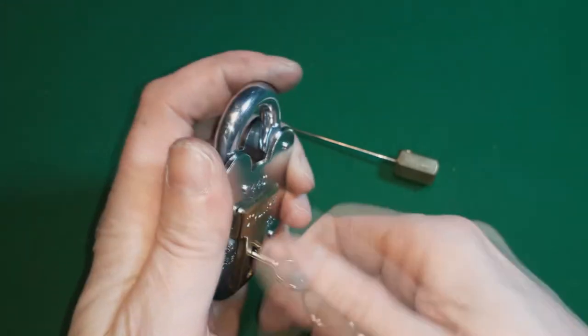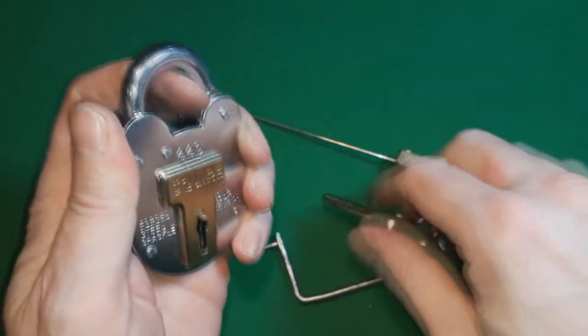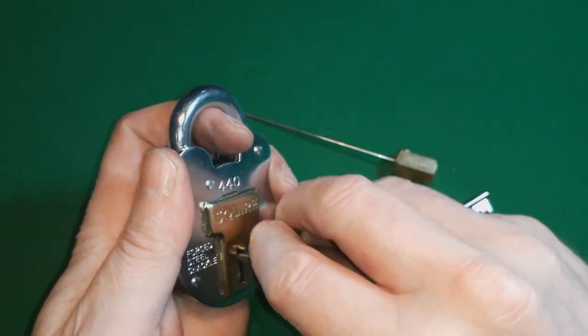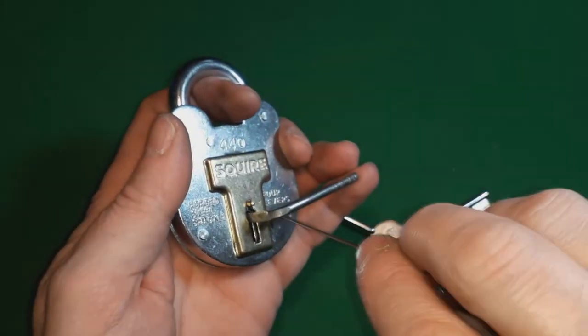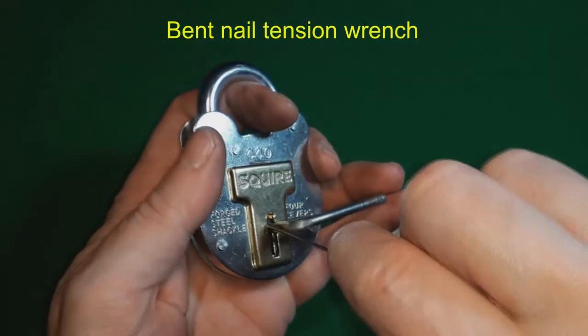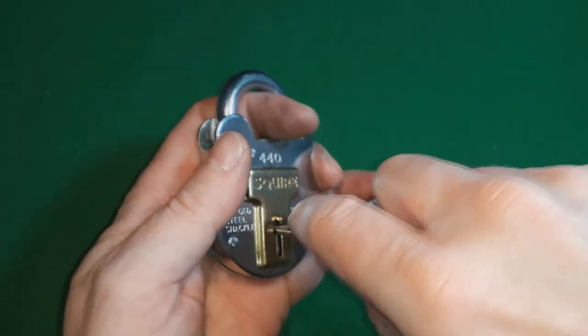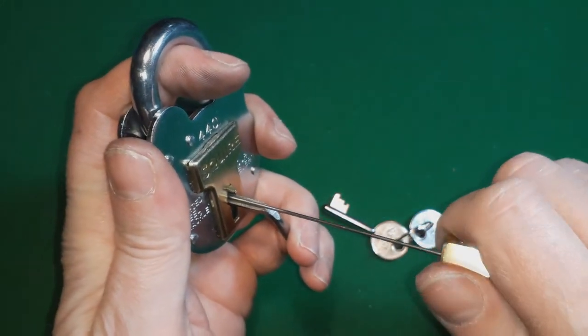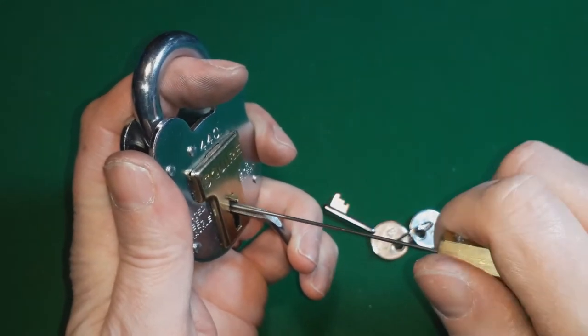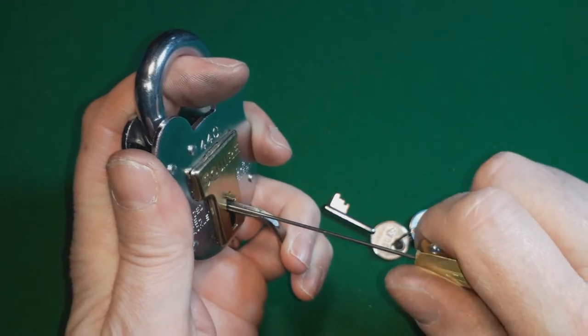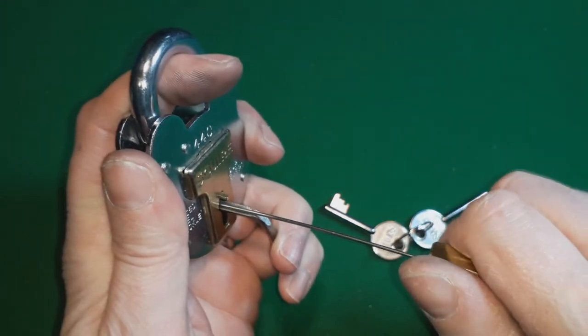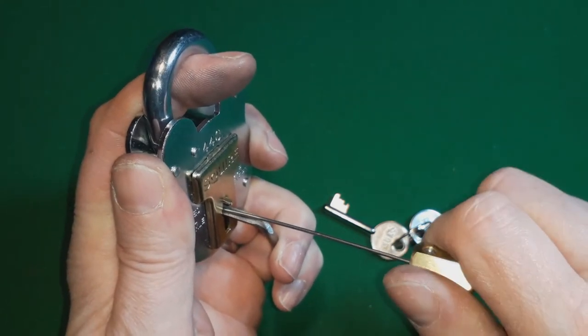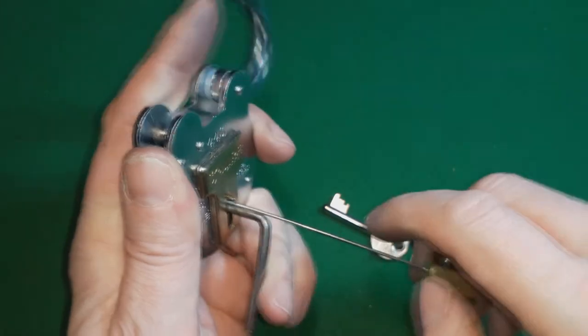So we make sure it's locked up. And this time we take our bent nail insert. And we get tension. And then what we do is we move along the stack, lifting the levers, trying to find binding levers. There we go.